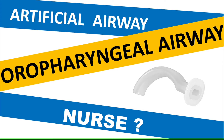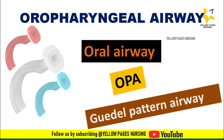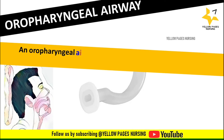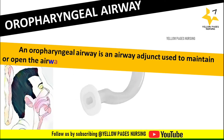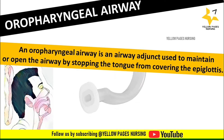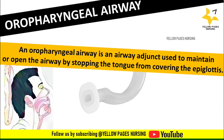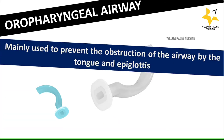Oropharyngeal airway is also called oral airway, OPA, or the Gudel pattern airway. An oropharyngeal airway is an airway adjunct used to maintain or open the airway by stopping the tongue from covering the epiglottis. It is mainly used to prevent obstruction of the airway by the tongue and epiglottis.